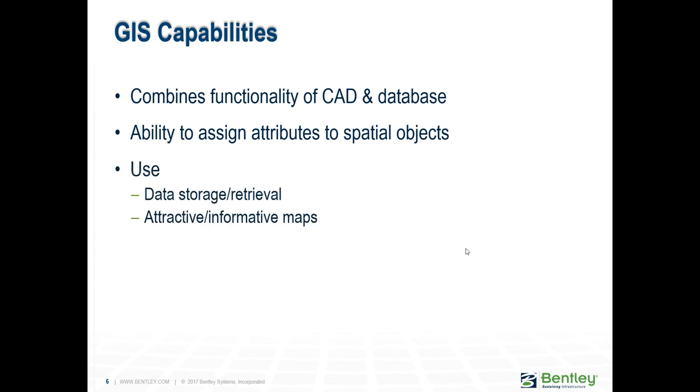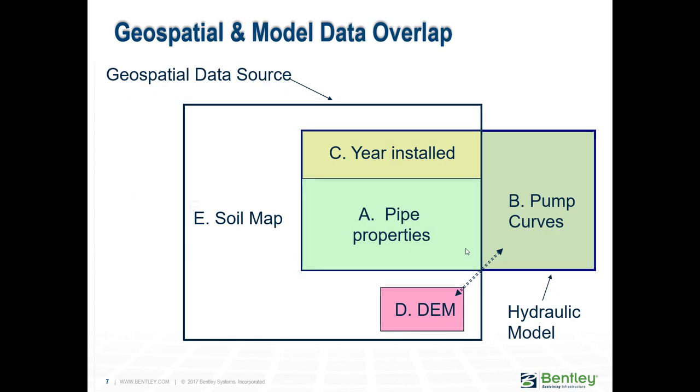Okay, I already mentioned why we prefer GIS. But if you have CAD, you can also bring CAD. GIS is preferred because you can assign attribute data. There's a lot of data in your GIS that you might not necessarily need for your model. You could bring it if you wanted to, like year installed, soil maps. So that's why we don't bring all the GIS. We just take what we need from it.